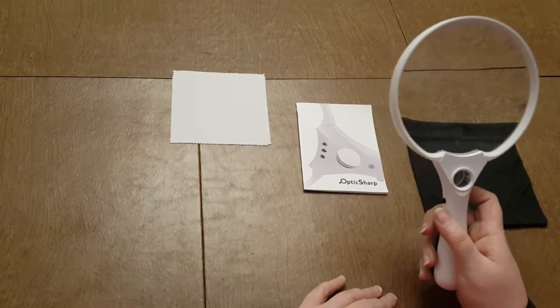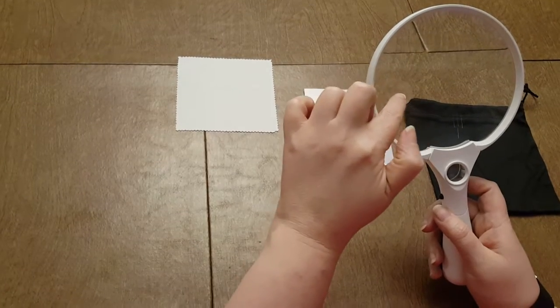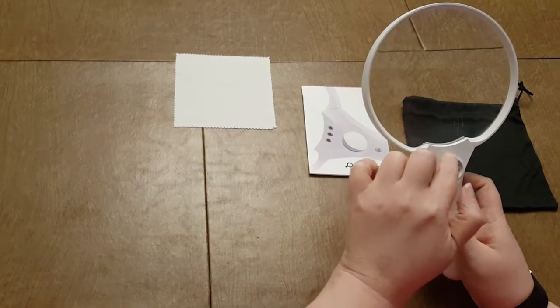It has three different magnification levels. This big circle is two times, this little circle in here is four times, and this circle here is ten times.